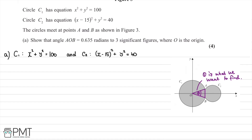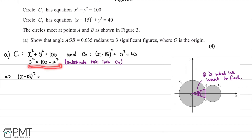We rearrange the first equation to get y squared equals 100 minus x squared. Then we substitute this into C2, replacing y squared with 100 minus x squared, giving us x minus 15 all squared plus 100 minus x squared equals 40.